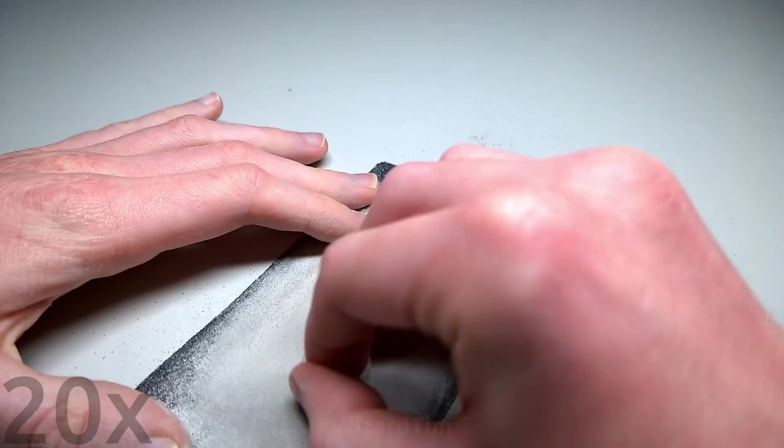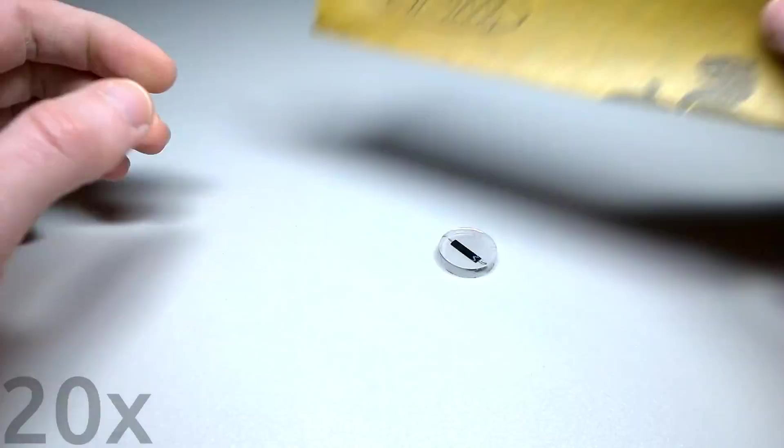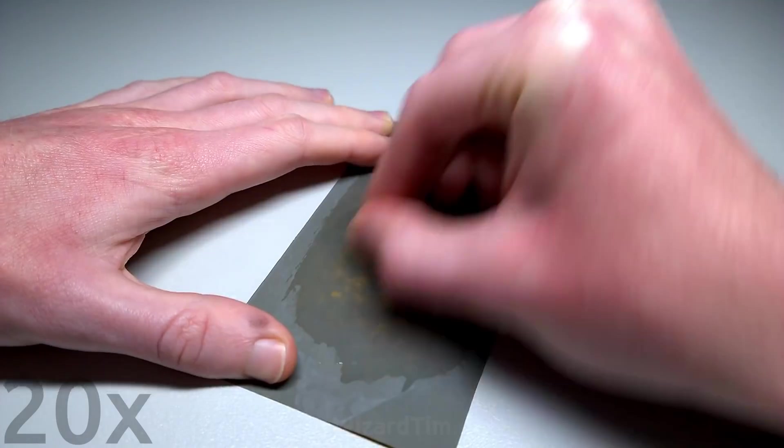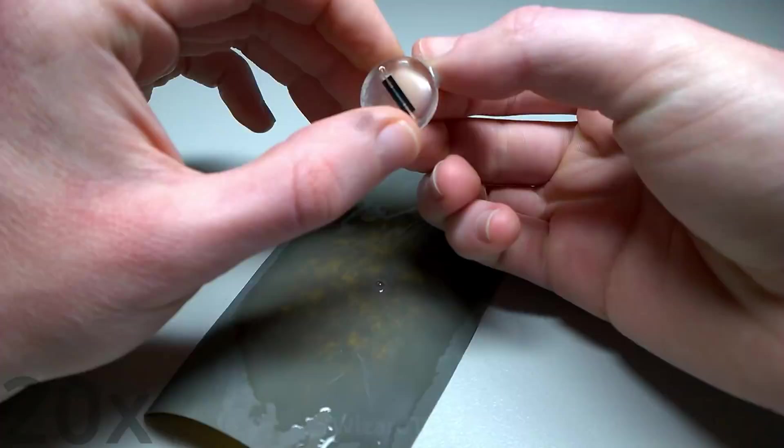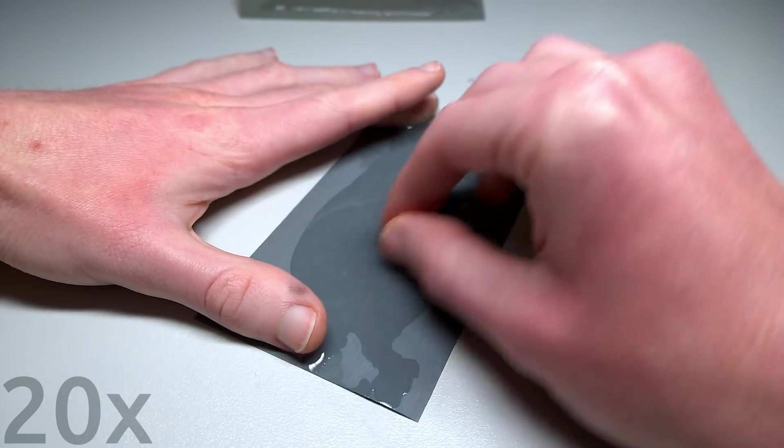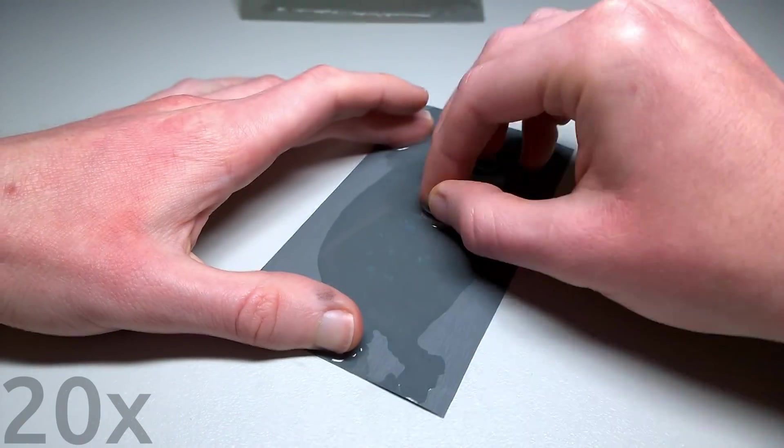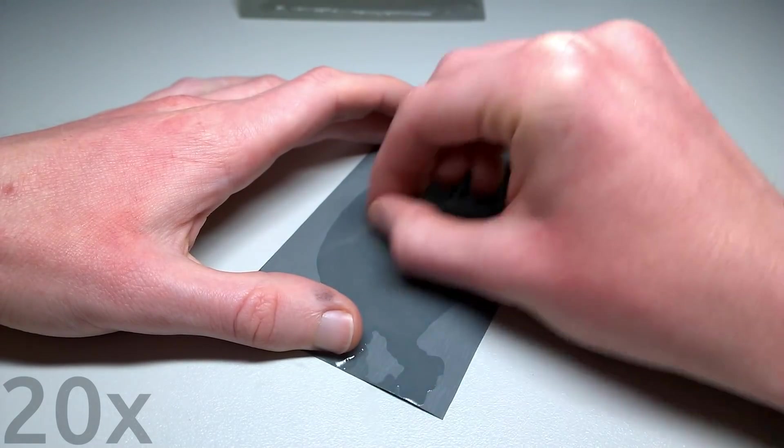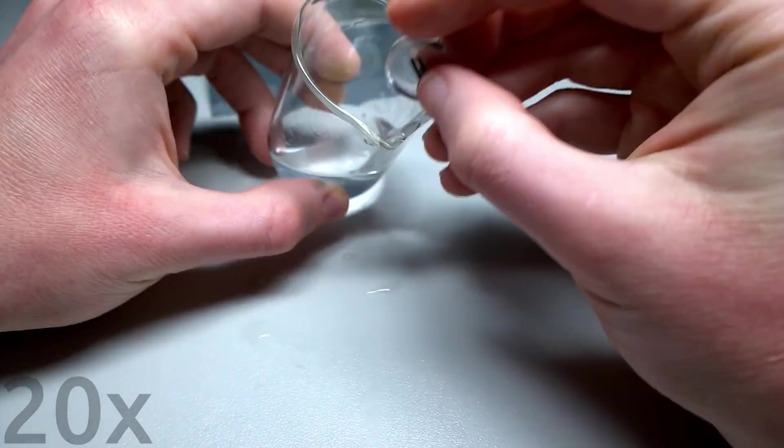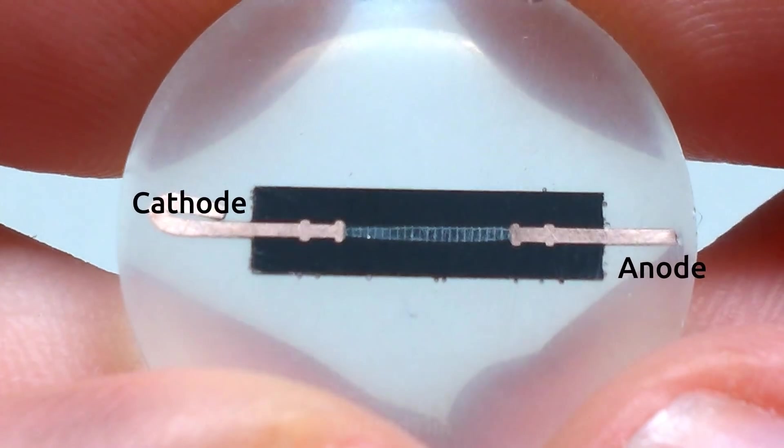And of course this took quite a while. It takes quite a lot of effort to sand these things down. Eventually I got to halfway through though and started polishing it with some 2000 and 3000 grit sandpaper to make it nice and smooth.